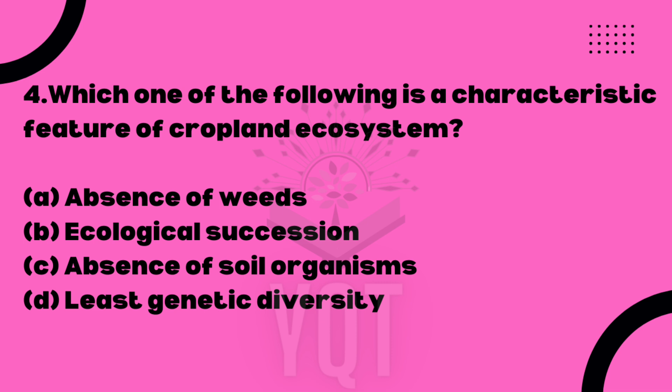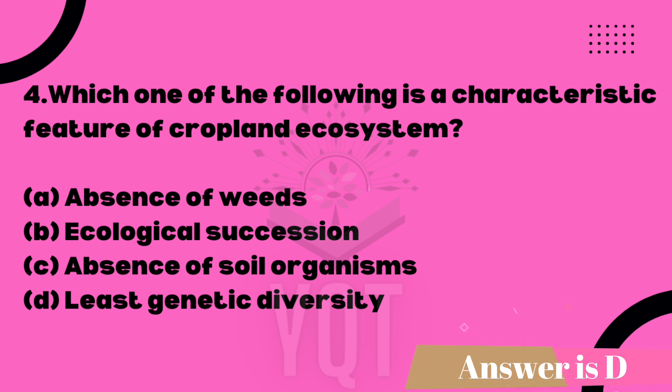The human being manages the cropland ecosystem. The options include: Option A: absence of weeds; Option B: ecological succession; Option C: absence of soil organisms; Option D: least genetic diversity. The correct answer is Option D — least genetic diversity. This question appeared in 2015.